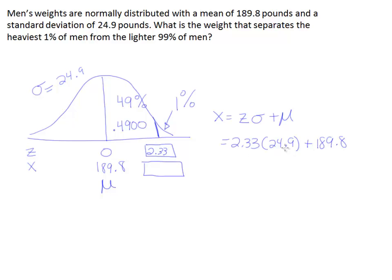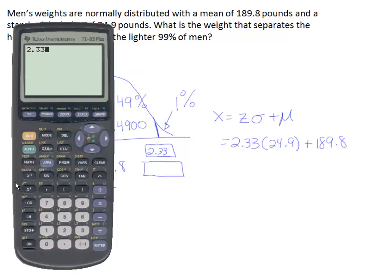So let's put that in our calculator. Okay, so we'll have 2.33 times 24.9 plus 189.8. And we end up with 247.82 pounds.